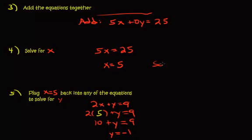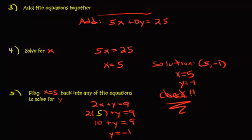There you go. There's our solution. My solution is going to be 5 comma negative 1, or you can write x equals 5, y equals negative 1. And please, please check these. Let's do another one.